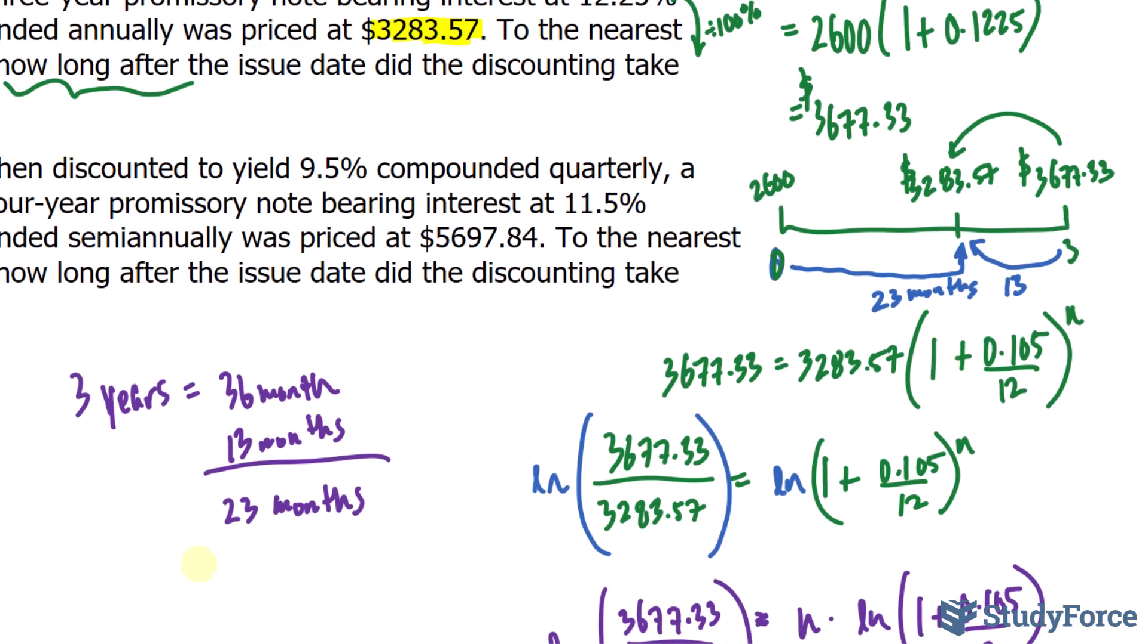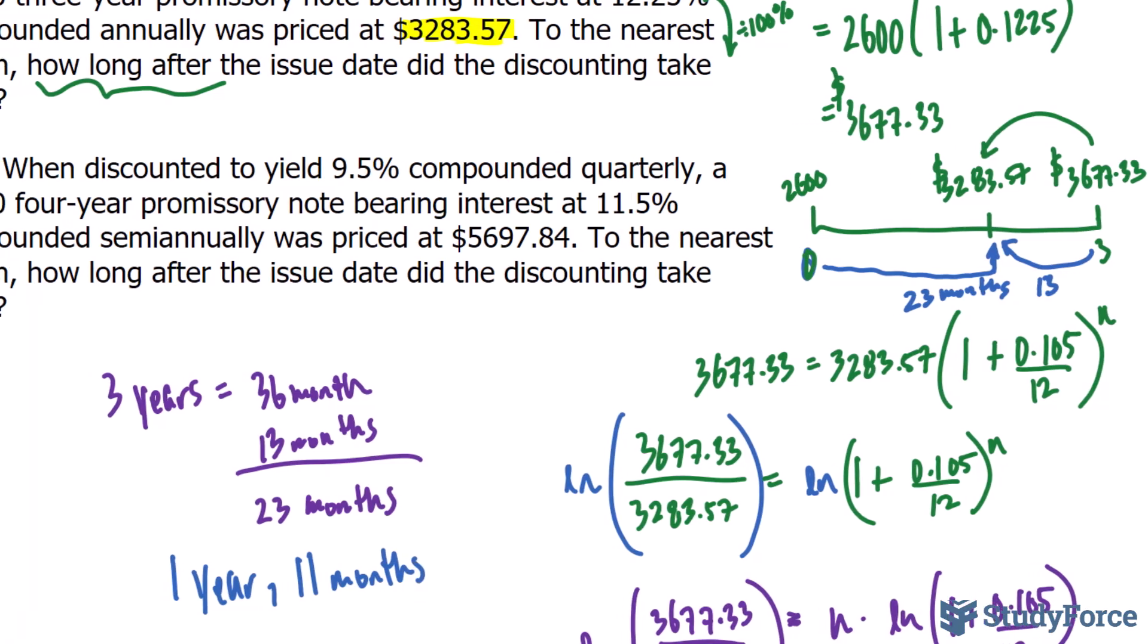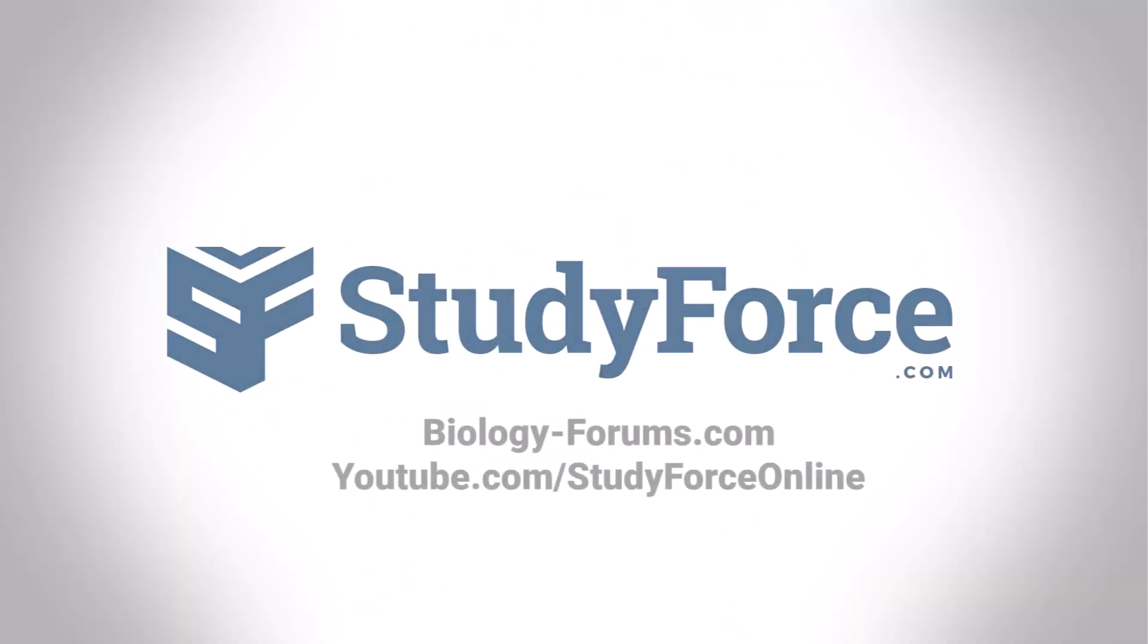You're more than welcome to write this down in years. So, it would be one year and 11 months from the issue date to get a value of 3,283.57. If you'd like to see the answer to question number two, simply leave me a comment in the comment section below and it will be uploaded. Thank you for watching.